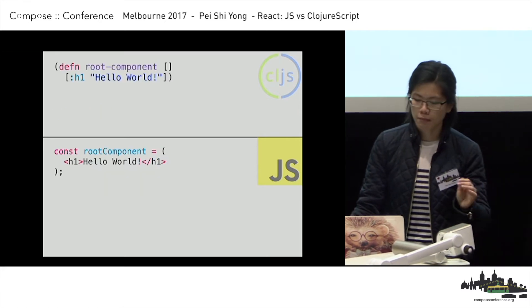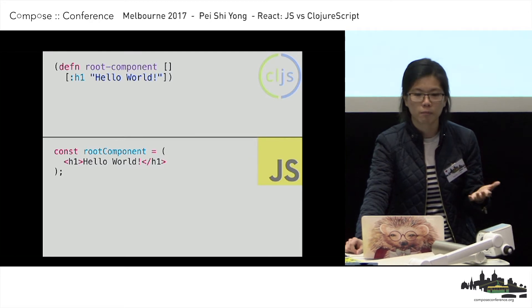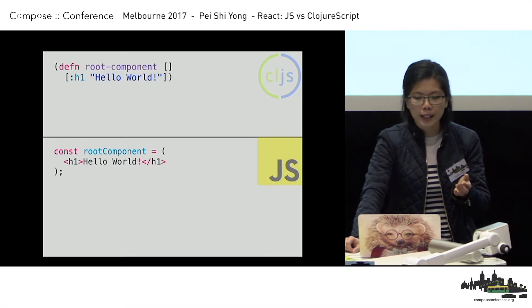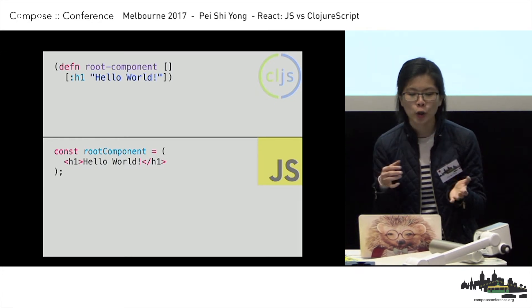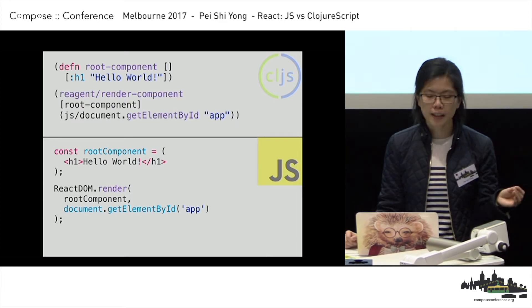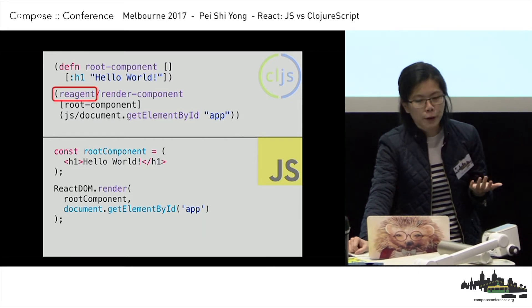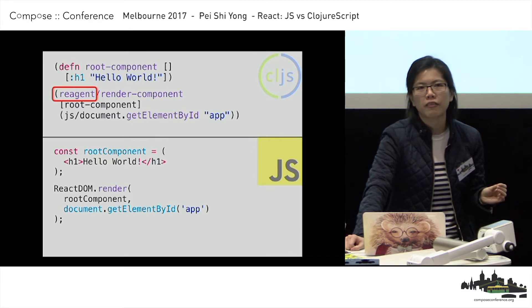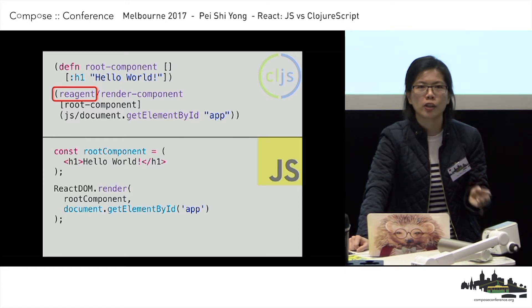The entry point to a React app, as many of you know, is a root component. In ClojureScript you declare the root component as a function, and then put whatever elements you want inside it. In JavaScript, this is an example of a functional component — it's just a rendering component, and you mount it onto the view using the ReactDOM.render function. In ClojureScript it's roughly the same: you have a render component, give it your root component, and it renders onto your element. I use a library in ClojureScript called Reagent, which provides a simple interface to doing React stuff in ClojureScript. It's quite straightforward — just a very thin layer and really simple to use.